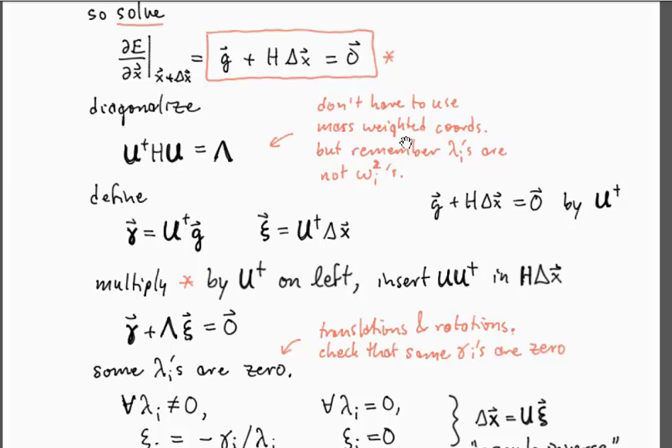If I'm not working in mass weighted coordinates then these won't actually be frequencies, but it's nice in some cases to make all the masses the same and then the problem is a little bit less ill-conditioned in terms of the convergence. Define a gradient vector in the eigenvector basis, and a displacement in the eigenvector basis.